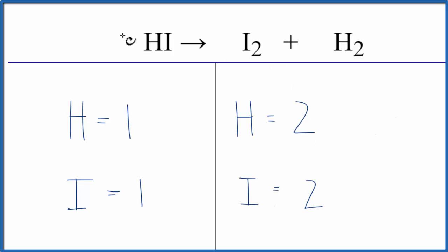So we can change the numbers in front. They're called the coefficients. What we can't do when we balance equations is we can't change the subscripts. And if there's no subscript, we assume there's a subscript of one. We can't change those. So all we can do is change the coefficients.